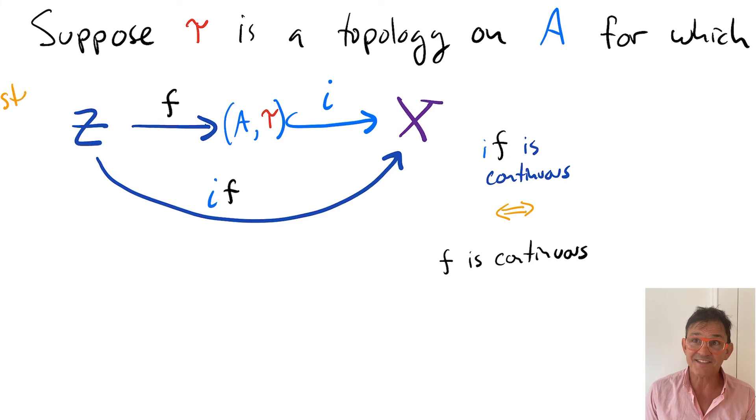For the second step, let Z be the set A with the subspace topology and let F be the identity function again. Now, we don't know that the identity function from A with the subspace topology to A with the topology tau is continuous.